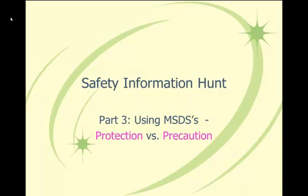Safety Information Hunt Part 3: Using MSDSs — Protection vs. Precaution. You will need to identify protections and precautions for your chemical compound. Protection is what a person needs to wear or have available to be protected from the harmful effects of a compound. Precautions are what you need to do to safely handle and store a compound.